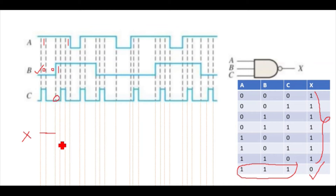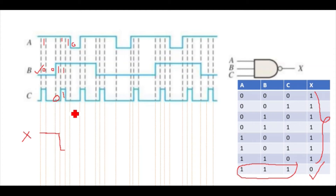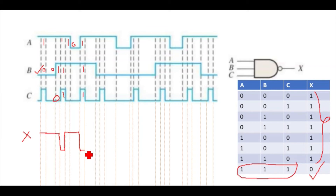Now at this point: A is one, B is one, and C is also one — all three inputs are one. So we will make the output zero. Next, A is zero here, so it will again become one and remain one till this value. At point Y, A is one, B is one, and C is also one, so the output goes to zero again.